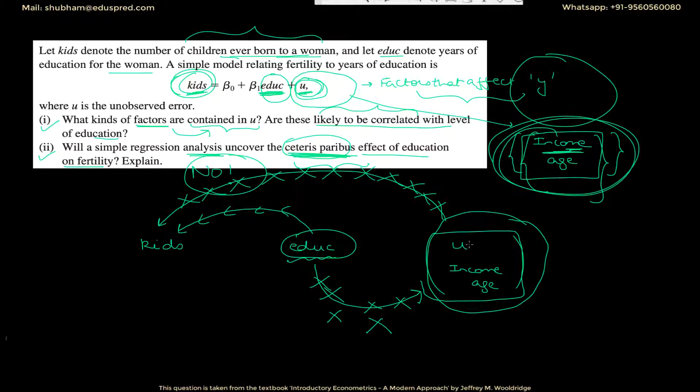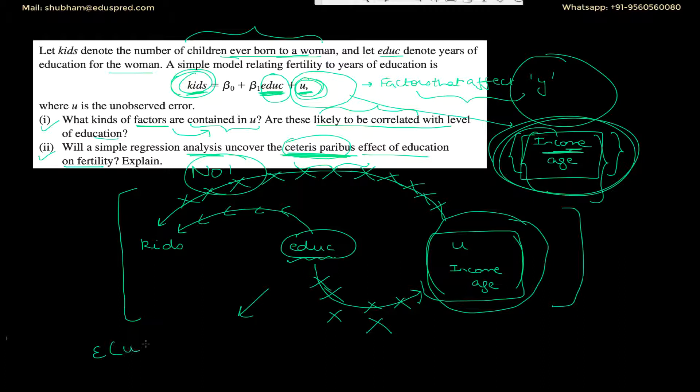This is exactly what is happening in this case. The variables in the error term include income, age, etc., and we've already discussed that income is positively related to education. So we will not be able to get the ceteris paribus effect of education on fertility. In terms of assumptions, this is actually a violation of the assumption that E(U|X) = E(U).